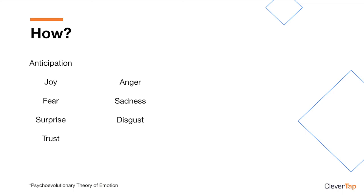Dr. Robert Plutchik developed a framework that classifies human emotions into eight categories: anticipation, joy, fear, surprise, trust, anger, sadness, and disgust. Removing the emotions of anger, disgust, and sadness, since they are not often used in marketing, we based our model on the remaining five emotions used in marketing copy.